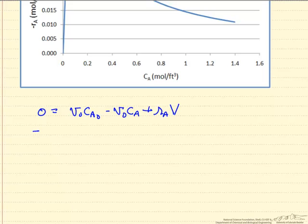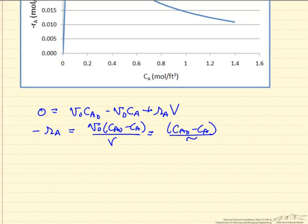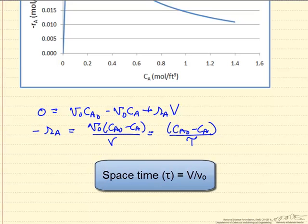Because I have a plot of negative rate of reaction I'm going to put that on the left side, and then on the right side I have this, which I'll rearrange in terms of space time, time in the reactor tau, the volume of the reactor divided by the volumetric flow rate.